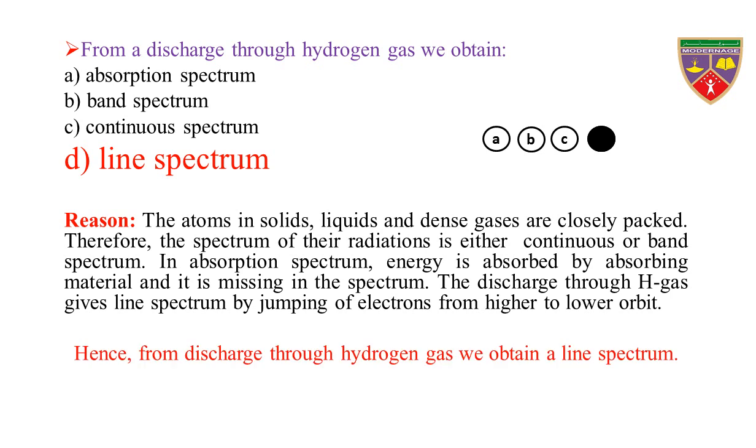The discharge through hydrogen gas gives a line spectrum by jumping of electrons from higher to lower orbit. Hence, from discharge through hydrogen gas, we obtain a line spectrum.